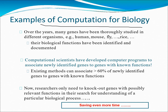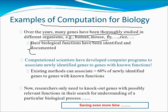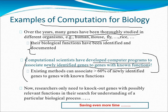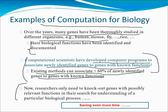Coming to more examples of computation for biology: over the years, many genes have been thoroughly studied in different organisms such as human, mouse, fly, and rice, and their biological functions have been explained. Computational scientists have developed computer programs to associate newly identified genes to genes with known functions. Existing methods can associate up to more than 60% of newly identified genes to genes with known functions, meaning researchers only need to focus on genes with possibly relevant functions for understanding a particular biological process.